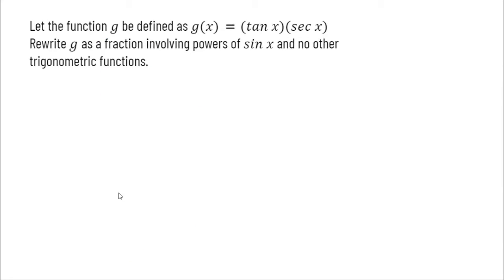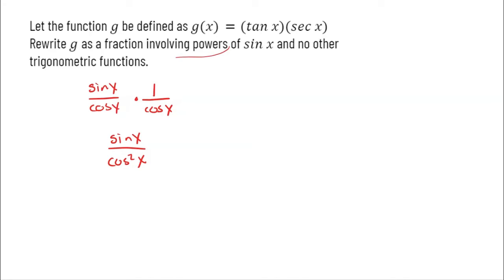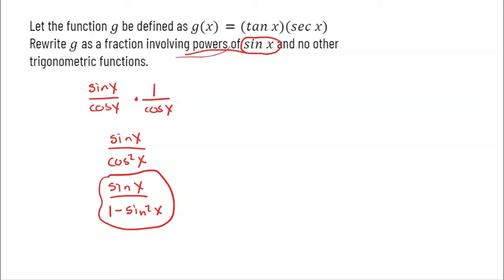This problem says: let g(x) = tangent of x times secant of x. Rewrite g as a fraction involving powers of sine of x and no other trigonometric functions. Let's turn tangent into sine of x over cosine of x and secant into 1 over cosine of x. Multiplying gives sine of x over cosine squared of x. To have only powers of sine, I replace cosine squared using the Pythagorean identity with 1 minus sine squared of x. That gives sine of x over (1 minus sine squared of x).